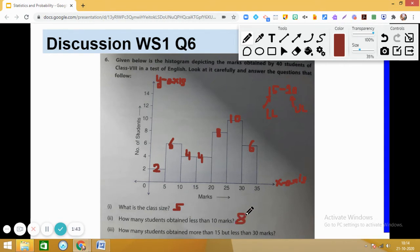Now the third question. How many students obtained more than 15 but less than 30 marks? More than 15 means 15 to 20, 20 to 25, and less than 30 means up to 25 to 30. So this will be 4 plus 8 plus 10.